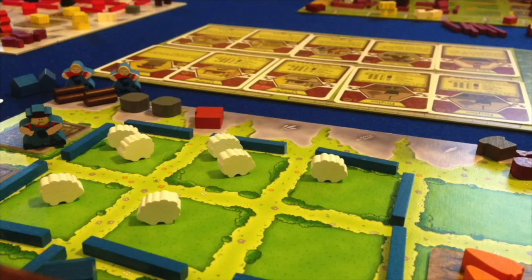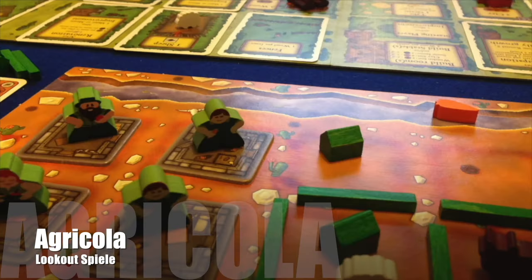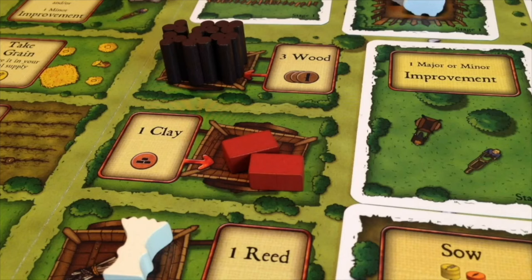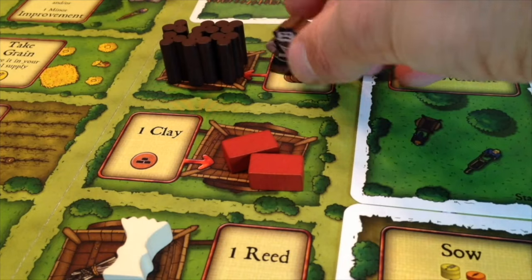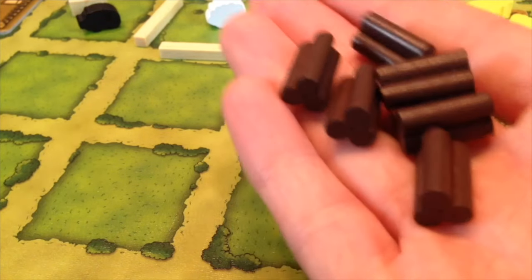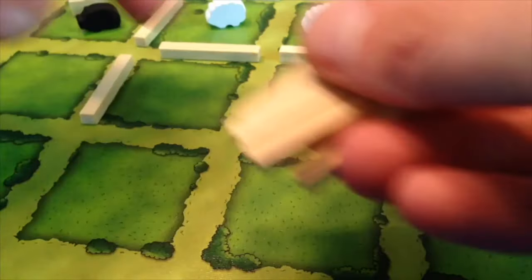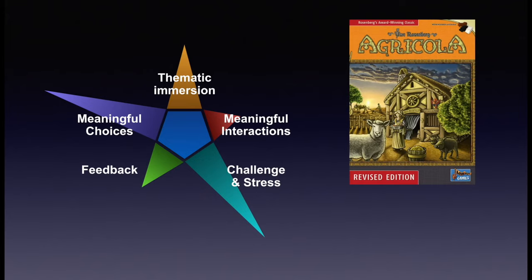Agricola involves a lot of strategic and tactical choices throughout the game. There's interaction, but it's indirect — it's depriving other players, often by accident. The game is known for its tension: the struggle to feed your family at each harvest. Its immersion is pretty high, largely because of the little tactile pieces and the logical progression to the narrative. The feedback is not particularly immediate — your actions do take some time to pay off. But overall it's a very engaging package.